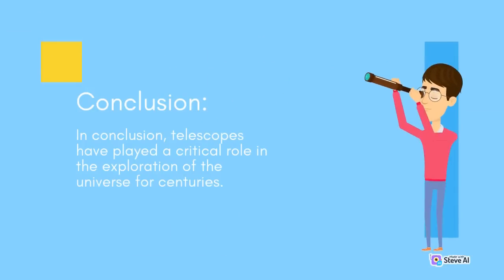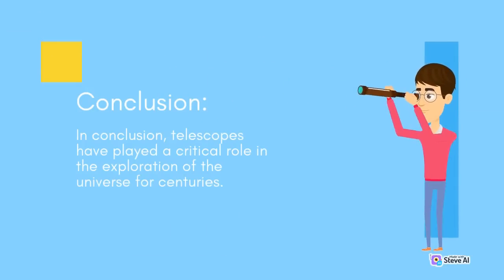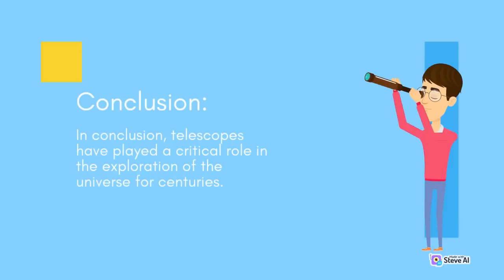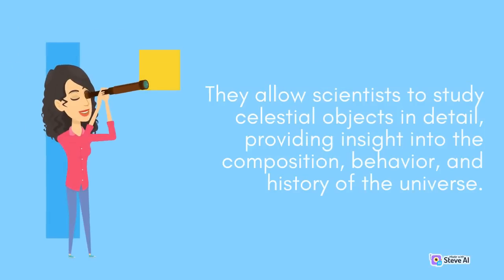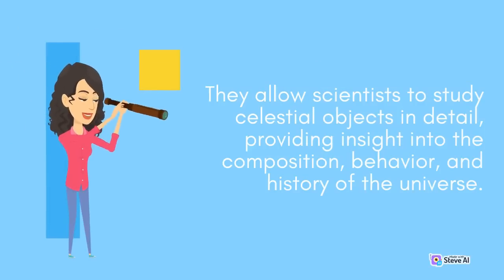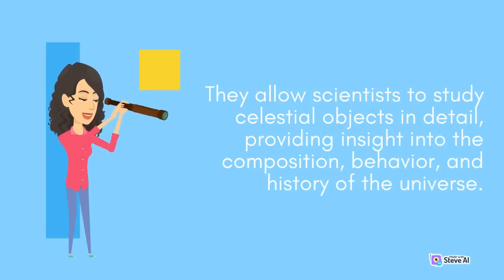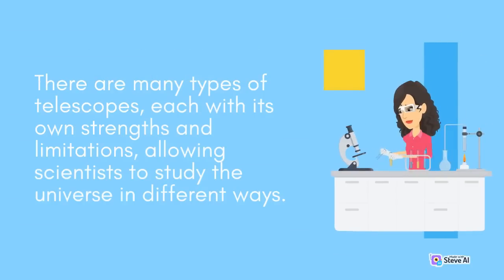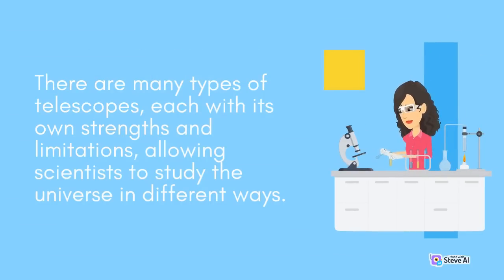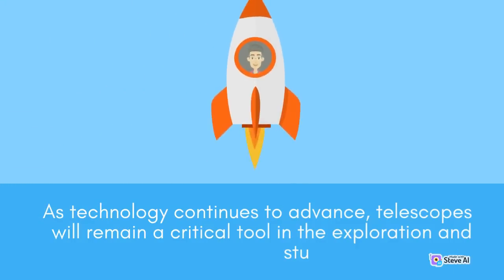In conclusion, telescopes have played a critical role in the exploration of the universe for centuries. They allow scientists to study celestial objects in detail, providing insight into the composition, behavior, and history of the universe. There are many types of telescopes, each with its own strengths and limitations, allowing scientists to study the universe in different ways. As technology continues to advance, telescopes will remain a critical tool in the exploration and study of the universe.